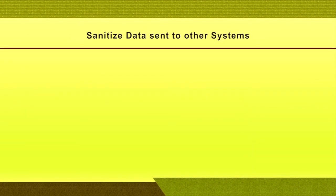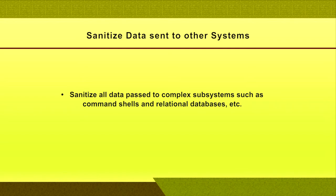Sanitize data before sending it to other systems — sanitize all data passed to complex subsystems such as command shells or relational databases. Before sending data to any system or network, it must be sanitized — avoid unnecessary data, send only what is needed, and don't send garbage data. This ensures that other systems do not get infected with unnecessary content.